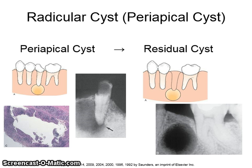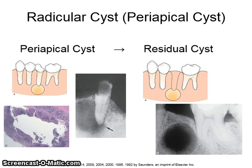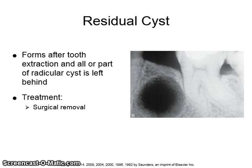A radicular cyst, or periapical cyst, which is not curetted out after extraction of a tooth, leads to the presence of a residual cyst. You will see these cysts in the location of a pre-existing tooth. It forms after tooth extraction when all or part of the radicular cyst is left behind. Treatment is surgical removal.